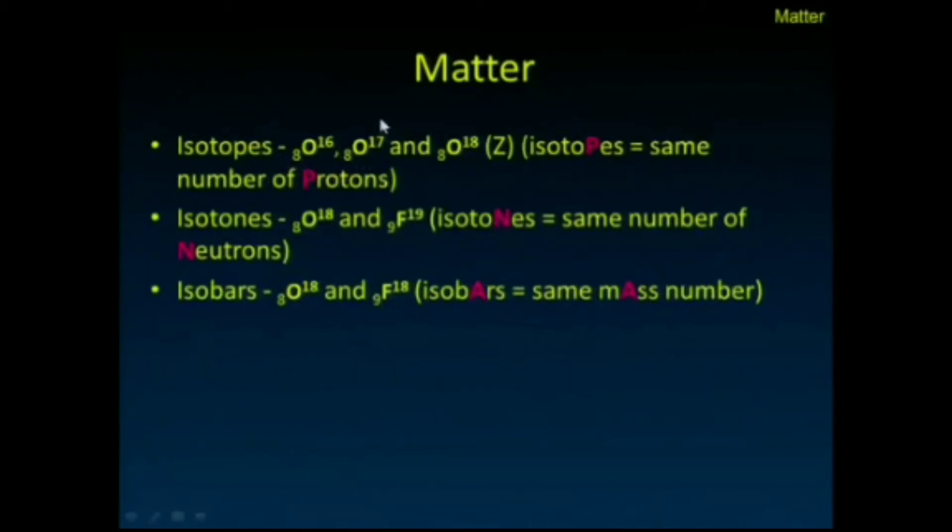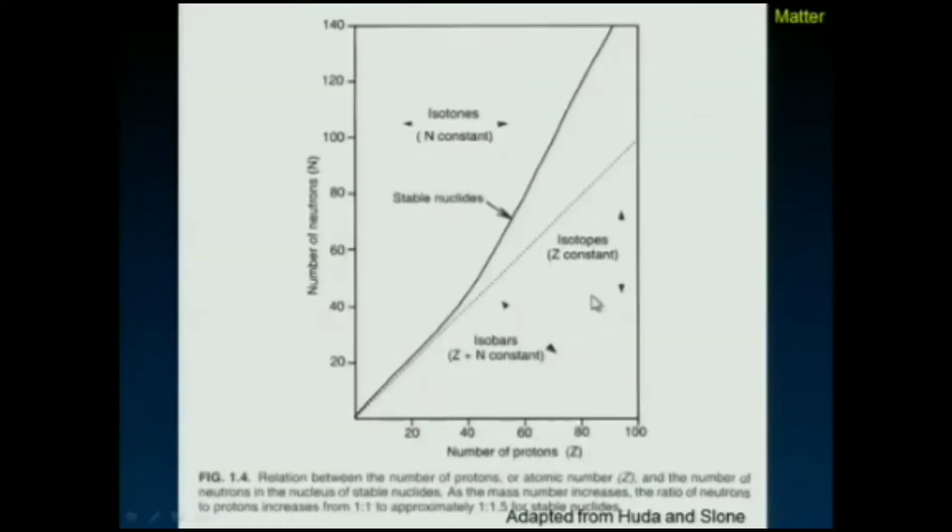So here are isotopes: O-16, O-17, and O-18 are all isotopes—they have the same number of protons. O-18 and F-19 are isotones with 10 neutrons each, and O-18 and F-18 are isobars with the same atomic mass number.